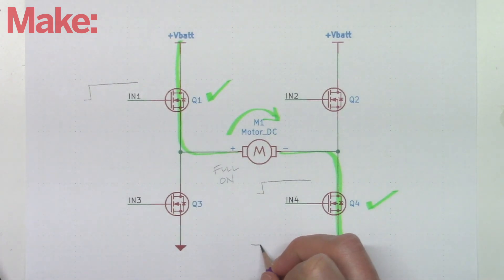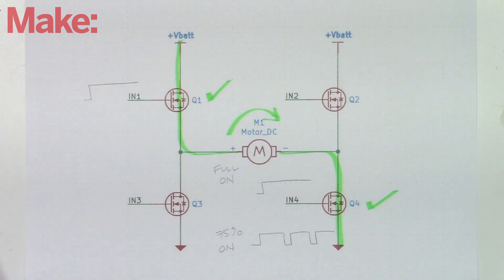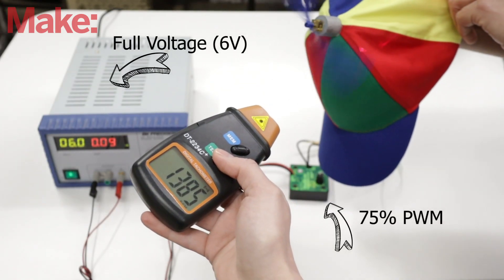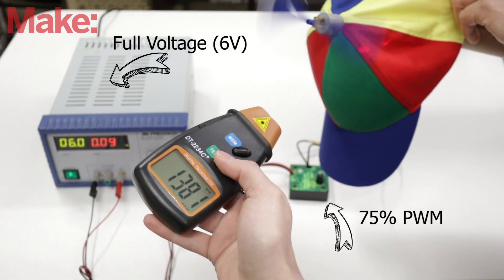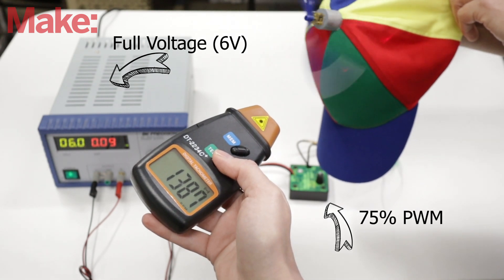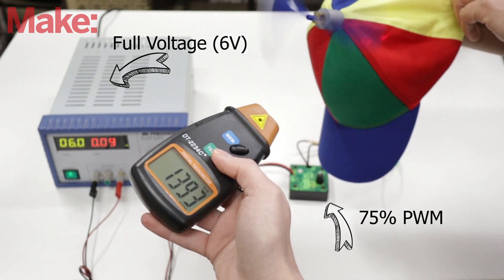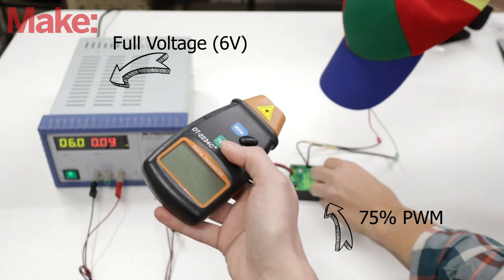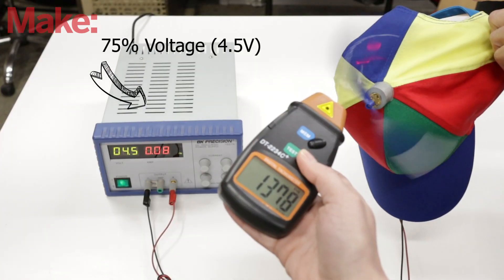If we instead send a PWM with a 75% duty cycle to the transistor's gate, the transistor will be on three-quarters of the time and off a quarter of the time. Since motors are essentially big inductors with a lot of inertia and stored energy, you can think of them as having an averaging effect on the power, and it's like you're driving the motor at three-quarters the voltage, which makes the motor go slower.